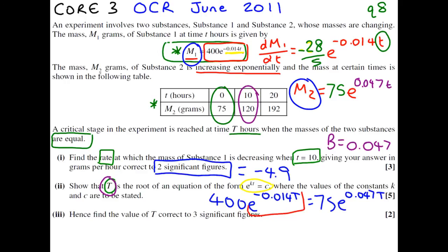400 over 75 equals, using your power laws, e—add the powers when you times—e to the 0.061 t.